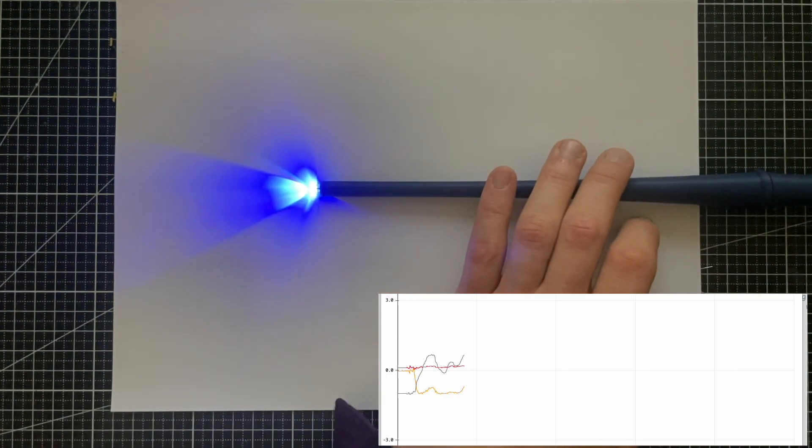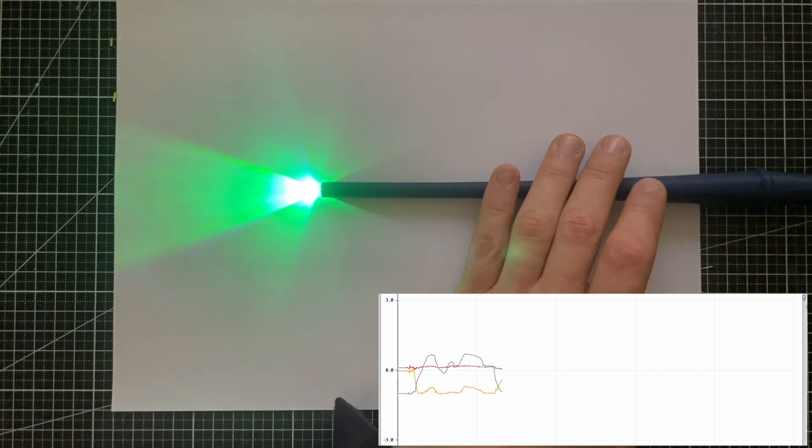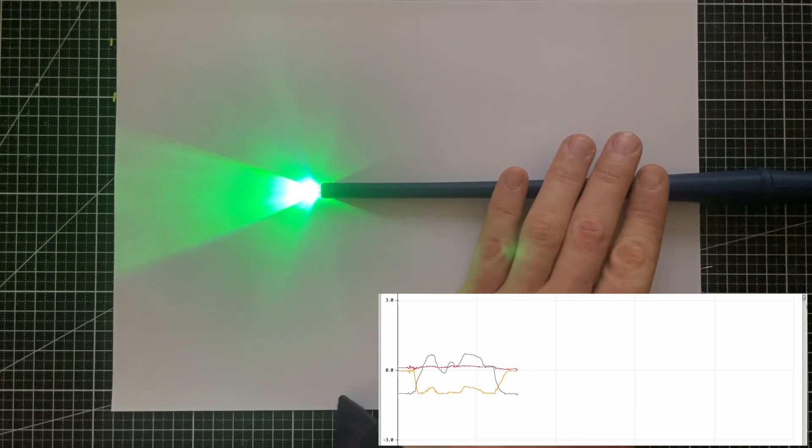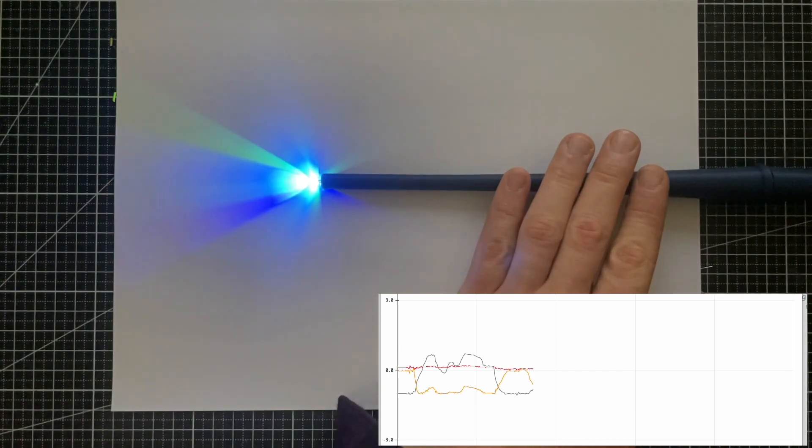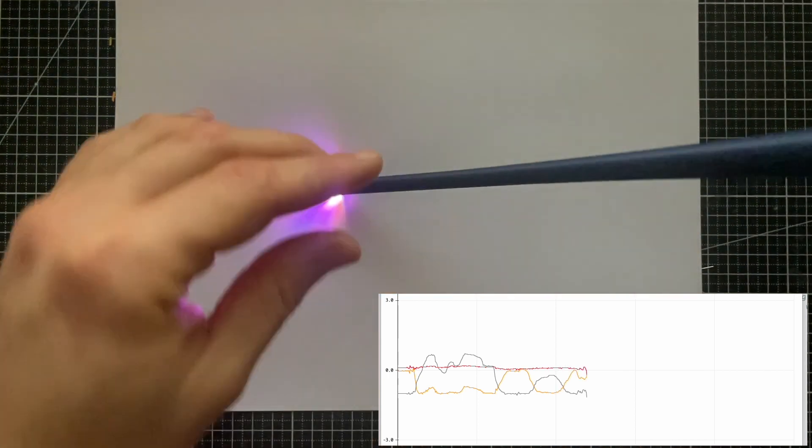So now if it's lying flat on the table, we always have 1G into the table. So as I turn around the controller, different axes of the controller get 1G.